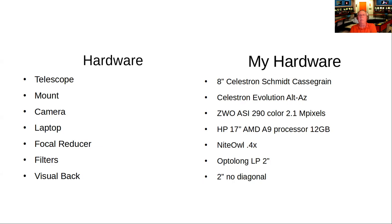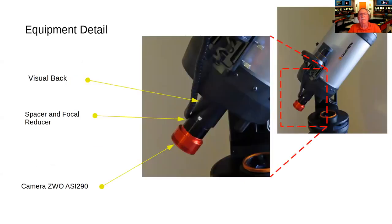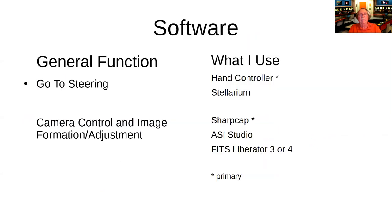I use a light pollution filter and the whole thing is on a two-inch visual back with no diagonal, which does cause some problems when trying to get close to the zenith. Here's the equipment on my scope — you can see the visual back, a spacer, and a focal reducer. The spacer was needed to get the right back focus for the camera. The camera is the typical red ZWO; it's a non-cooled camera, which to date hasn't caused me a lot of problems.